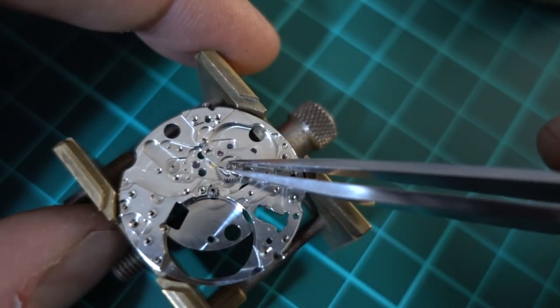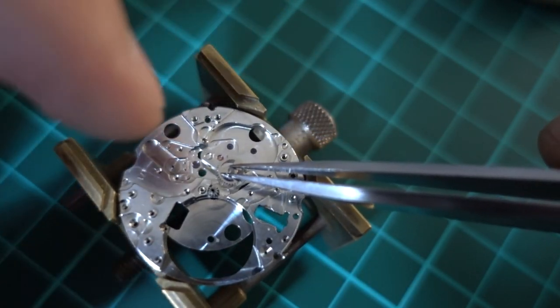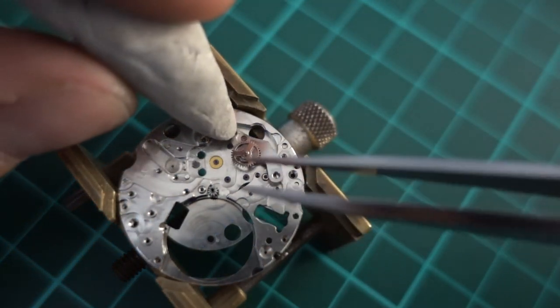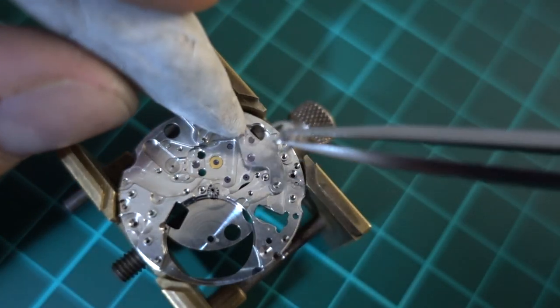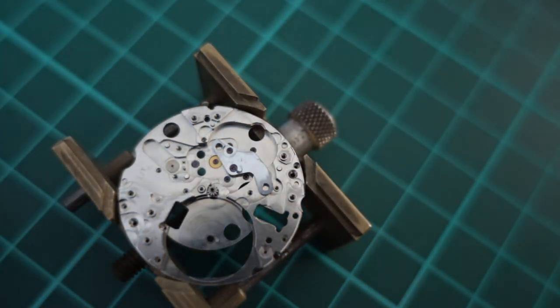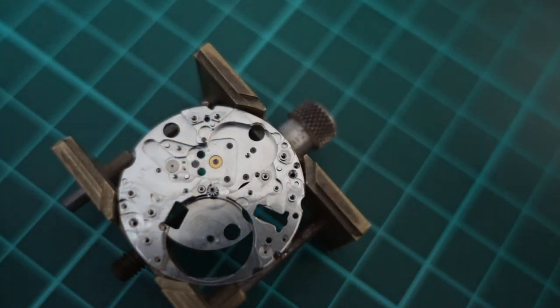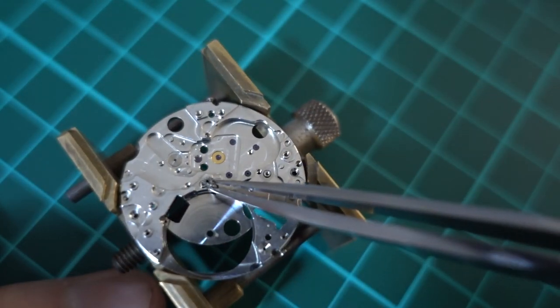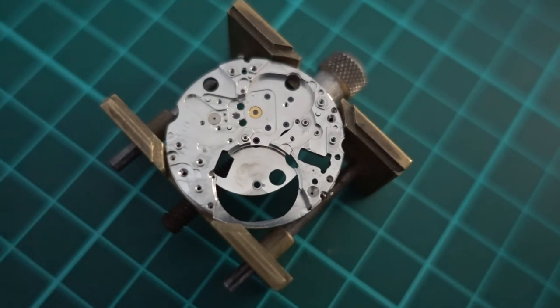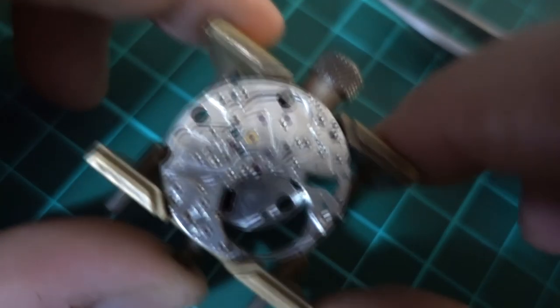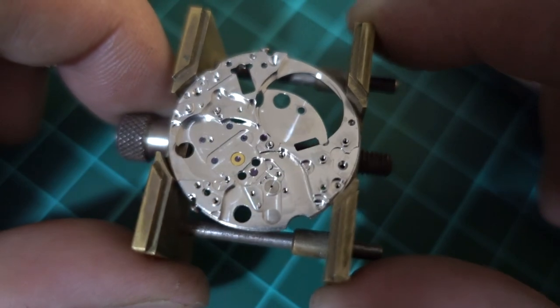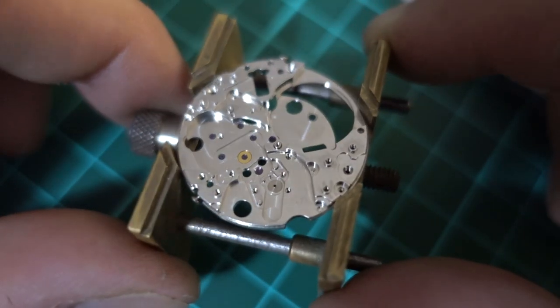That centre wheel also acts as the cannon pinion, and I've removed the bridge there and you can see that intermediate wheel. They always get very dirty, those intermediate wheels in this watch. I'm not quite sure why. And the combined centre wheel and cannon pinion. Alright, that's pretty much the end of this video. If I need to make any corrections I'll make them in the comments or in the description. And yeah, keep a look out for another video later on where I'll show the watch running. Thanks.